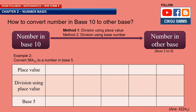Now we see how to convert from base 10 to another base. We have two methods. The first method is division using the place value, and the second method is division using the base number. I would suggest you try to use method 2, but we'll see method 1 first — division using place value.